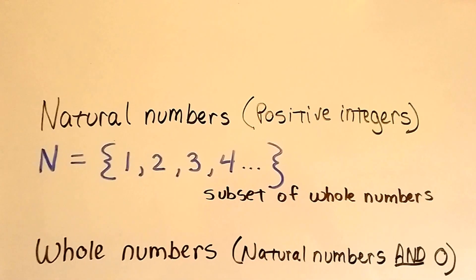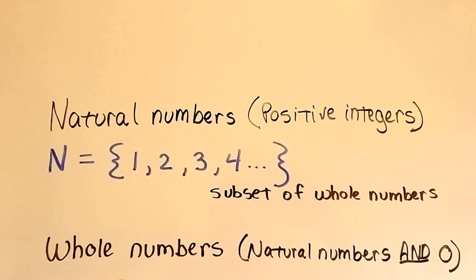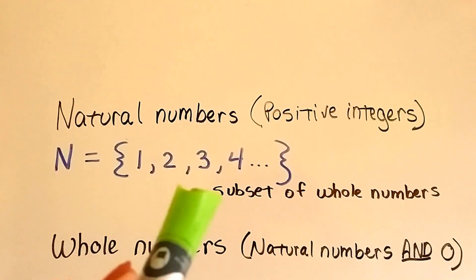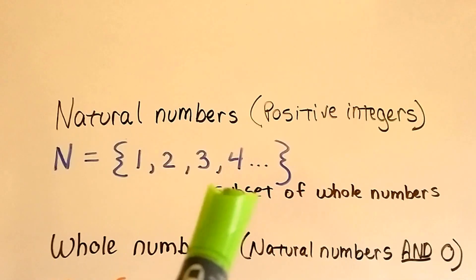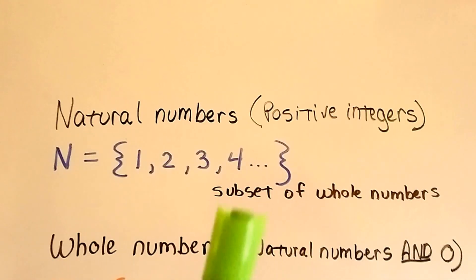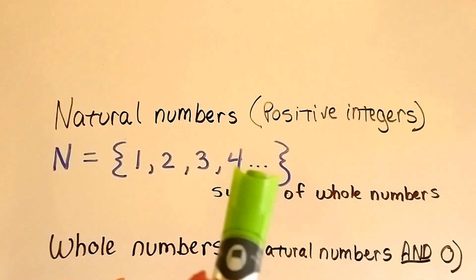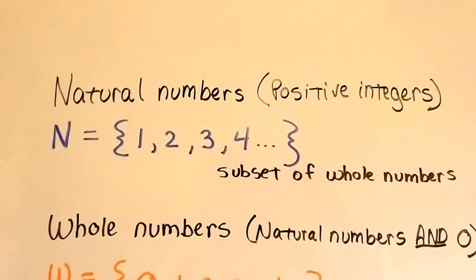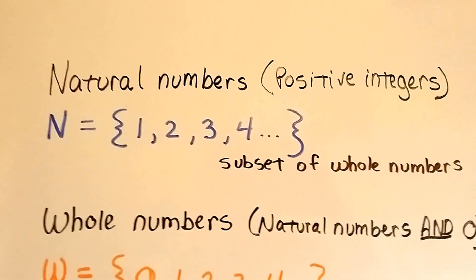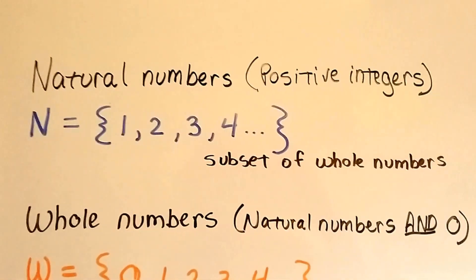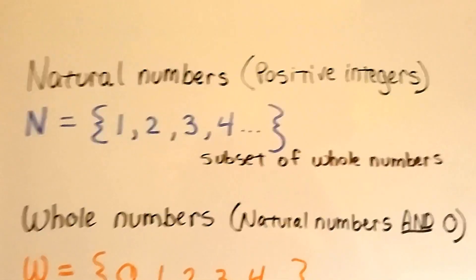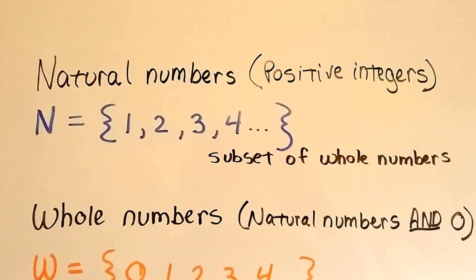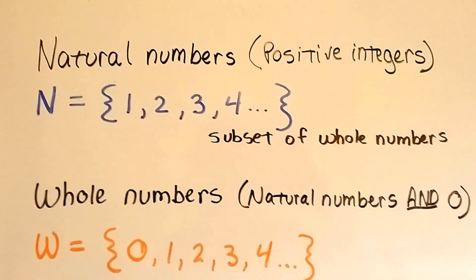We could say N equals, with braces on each side, 1, 2, 3, 4, and we put this ellipsis. That's what the dot, dot, dot is — it's called an ellipsis. And that tells us that it continues on. That is our set of natural numbers.